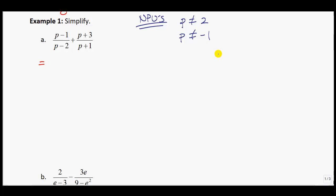Now from here, I would notice that my LCD is basically the two denominators that I have right there. I can put it all over one denominator: p minus 2, all multiplied by p plus 1. The terms on the left-hand side, the p minus 1 over p minus 2, is missing a p plus 1, so I'm going to multiply it by p plus 1. On the other side, the p plus 3 is missing a p minus 2, so it gets multiplied by p minus 2.